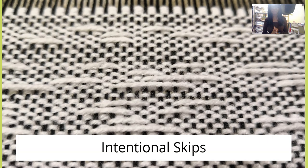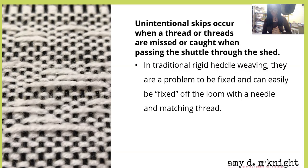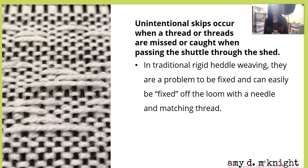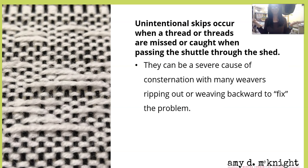We're going to kick this off by starting with intentional skips. We've all done it — we've skipped a thread or two, and there are loads of videos showing you how to fix it. Those are unintentional skips, and they occur when a thread is missed or caught when passing the shuttle through the shed. In traditional rigid heddle weaving, they are a problem to be fixed and can be easily fixed off the loom with a needle and matching thread.